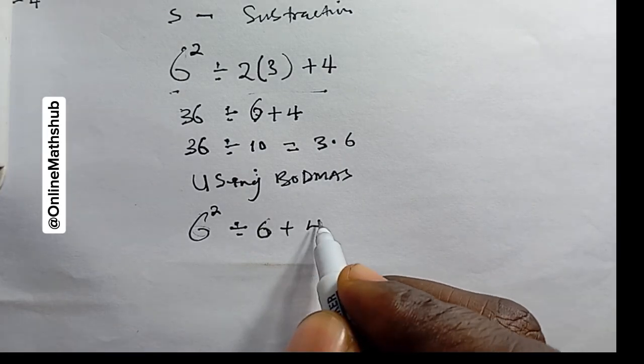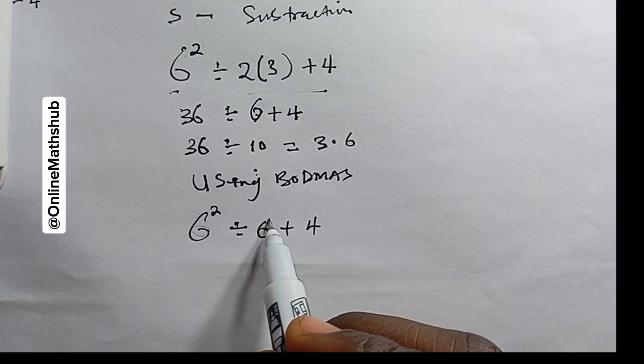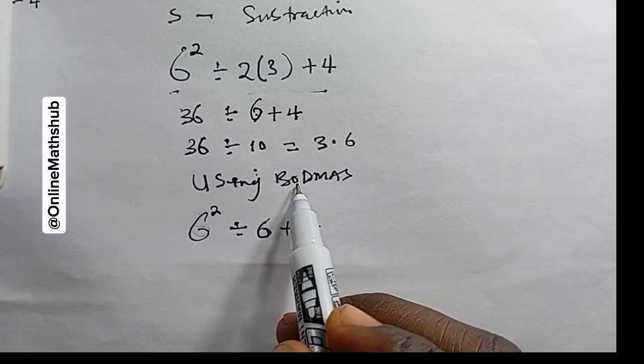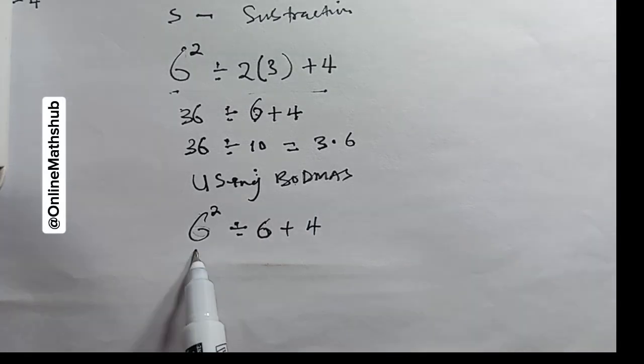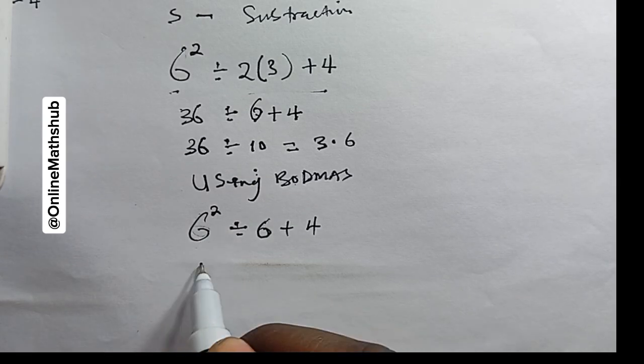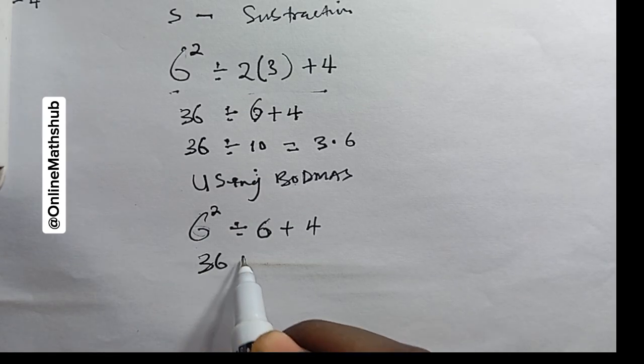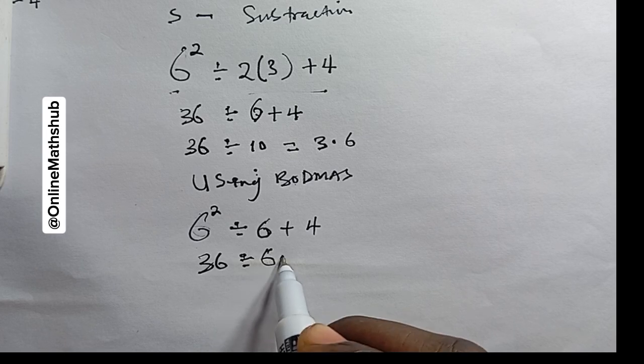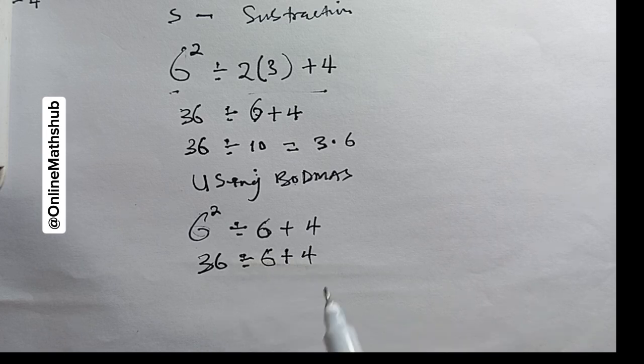Next, I simplify the 'O' (exponent). So 6² is 36, divided by 6, plus 4.